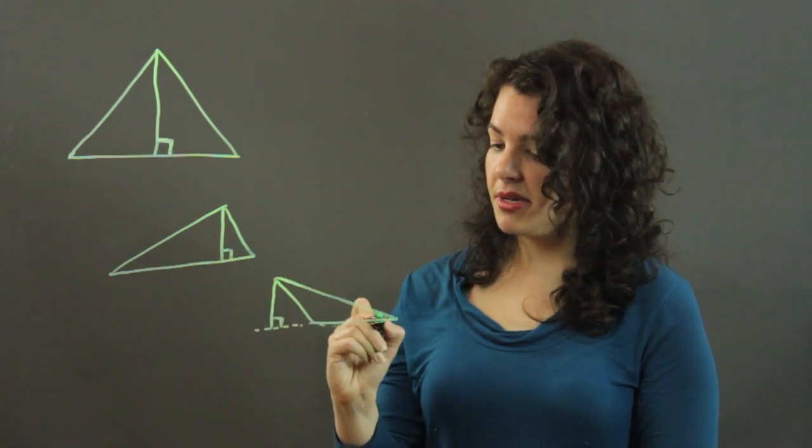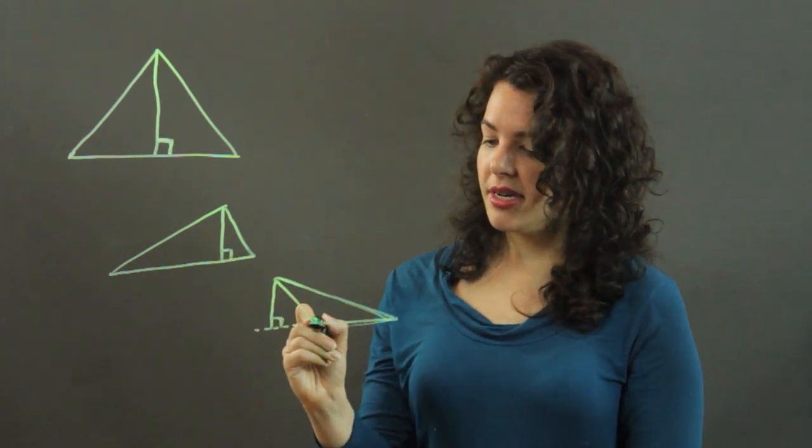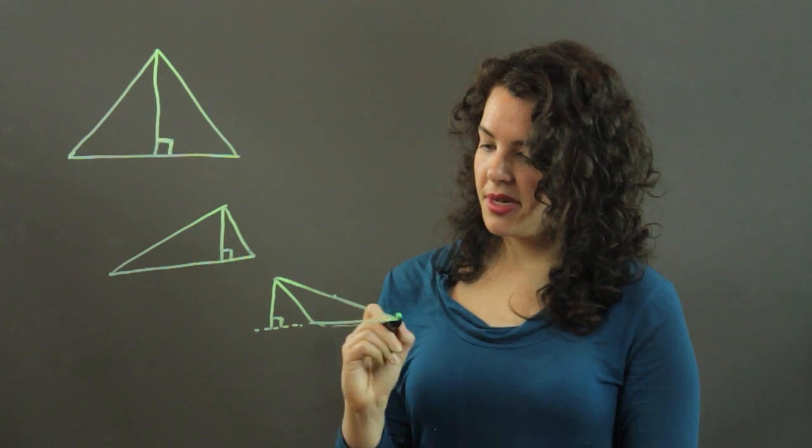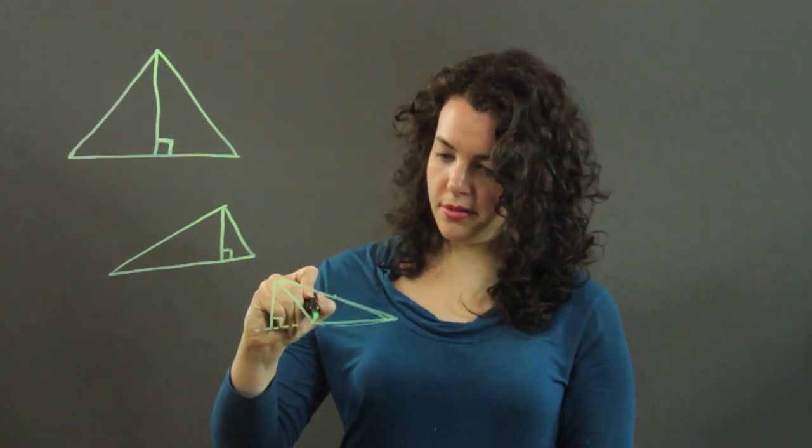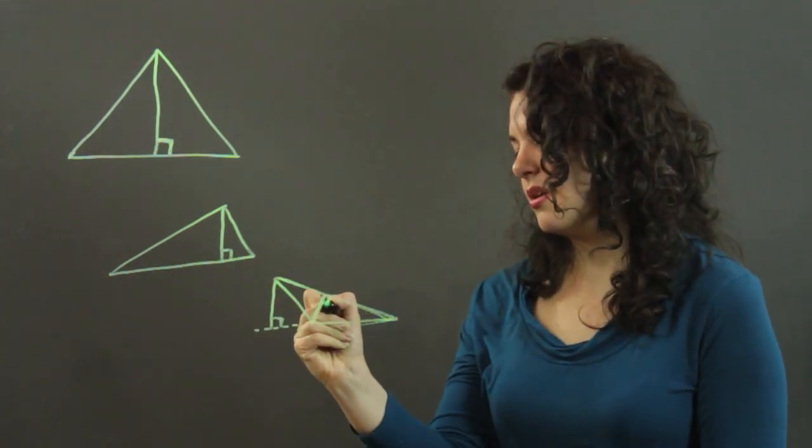But if this is my base, then my height, again, I go to the vertex opposite my base, that's this vertex, and I draw a line perpendicular to that base.